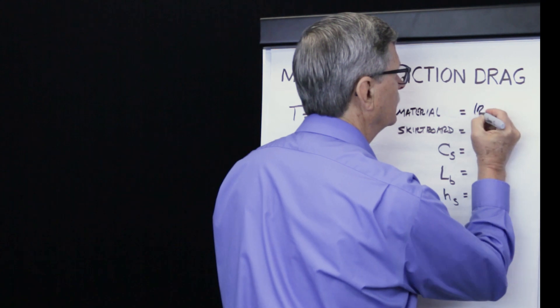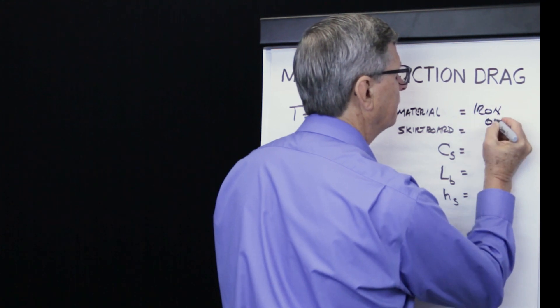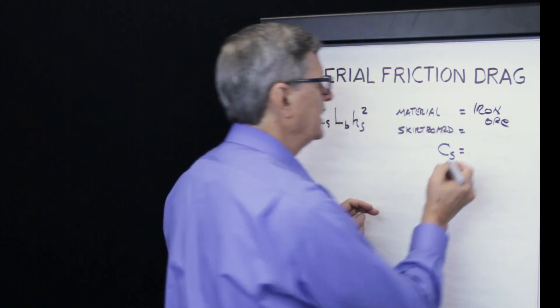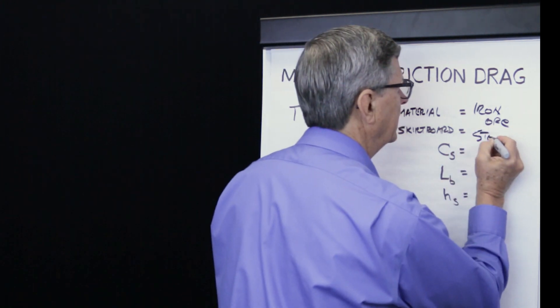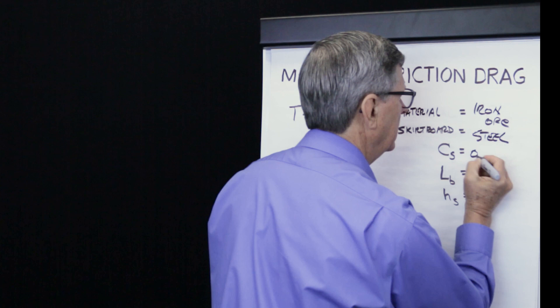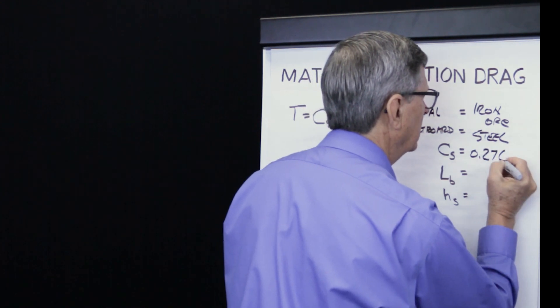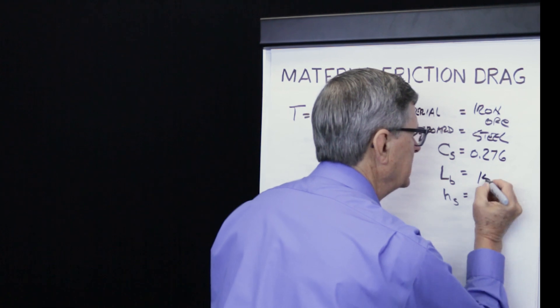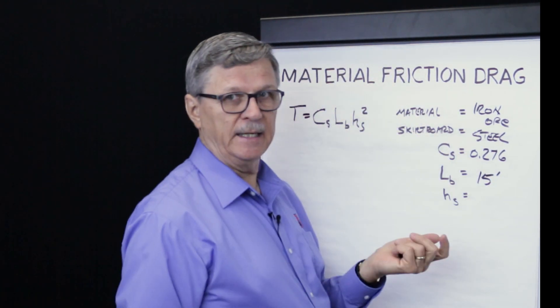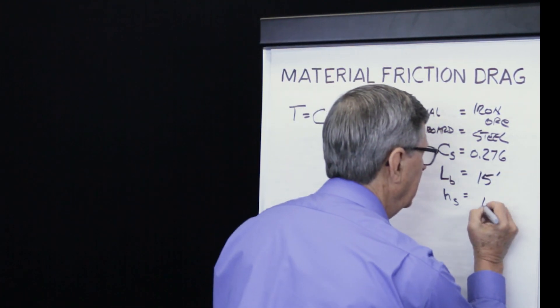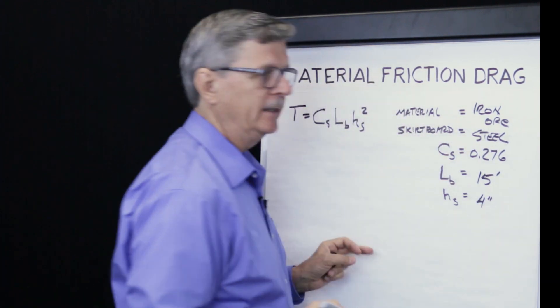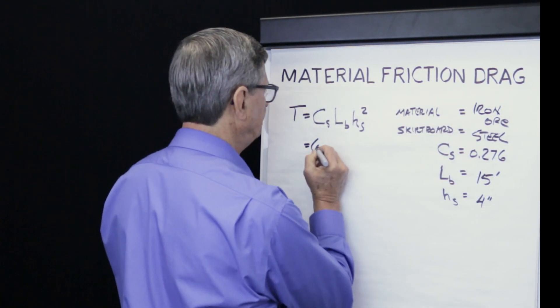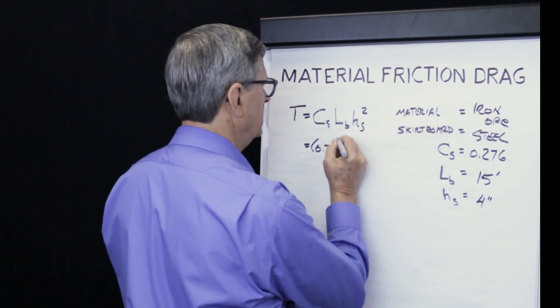Material is iron ore. In this example, we will assume that the skirt board is made from steel, which is very typical. CEMA gives us a frictional coefficient of 0.276. For the example, we'll assume that the length of the zone is 15 feet and the depth of material within that zone is 4 inches.